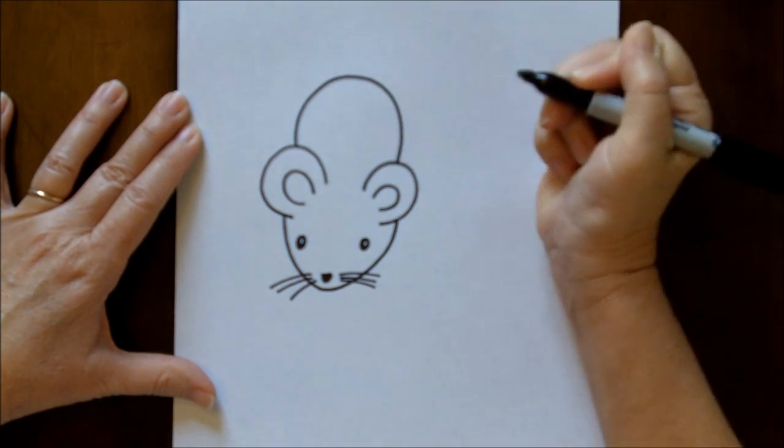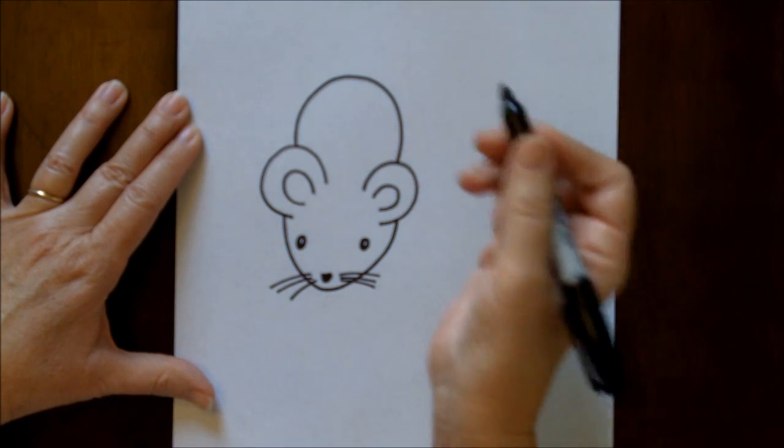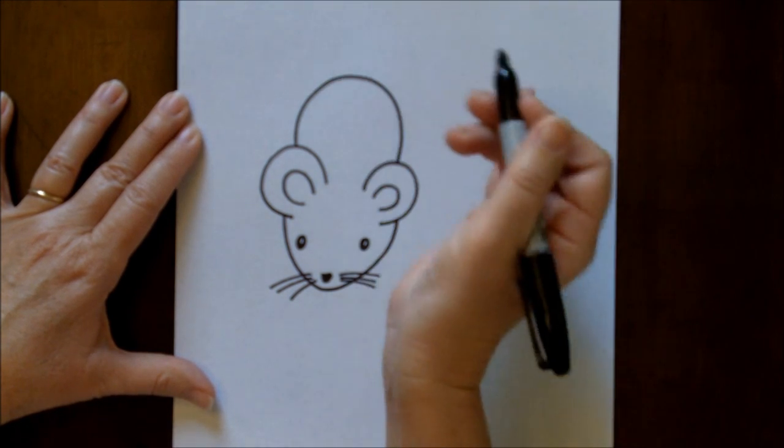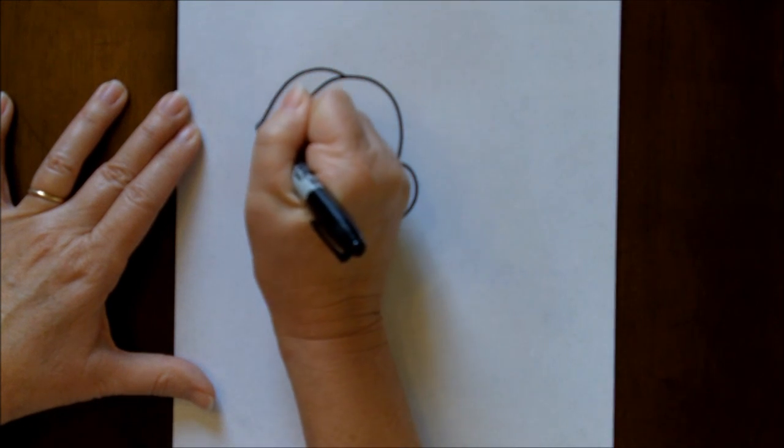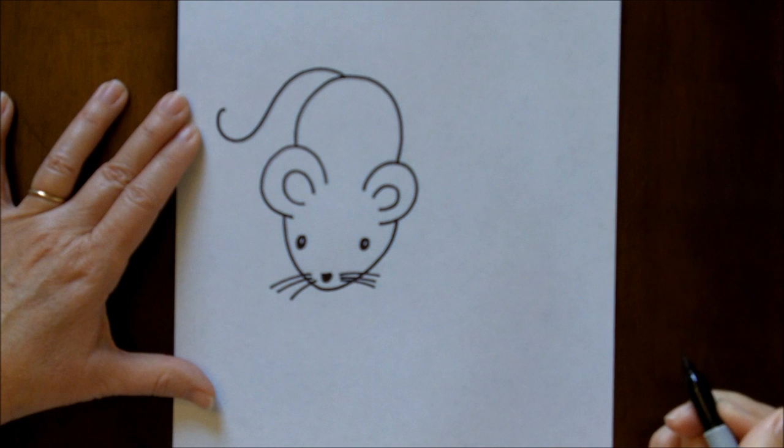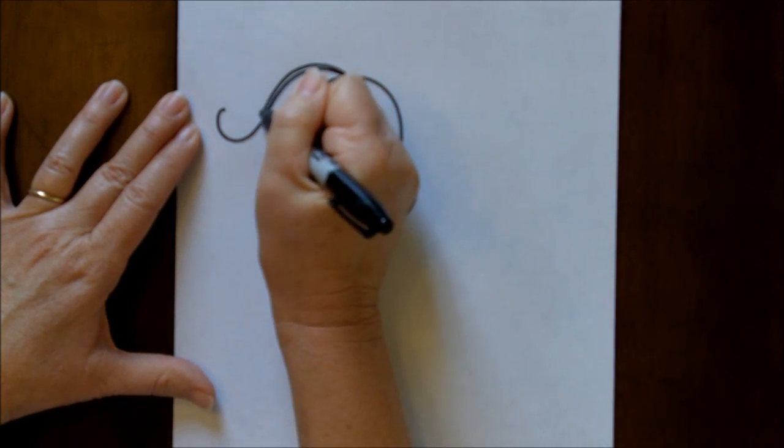You have to figure out kind of where you'd like his tail to go. To the left, to the right, straight? I think I'm going to do a curvy tail coming out this way. And you can even go over it again to make it a little bit thicker, give it a little bit more dimension.